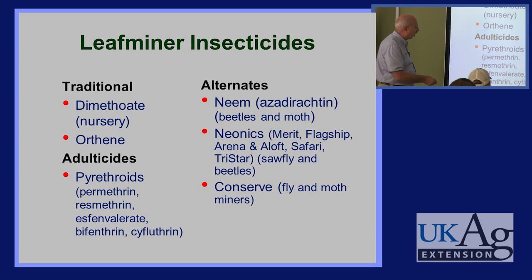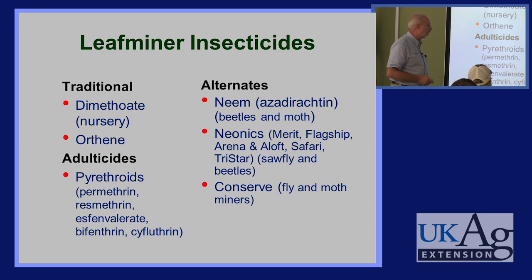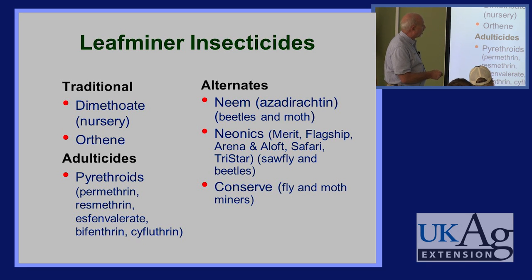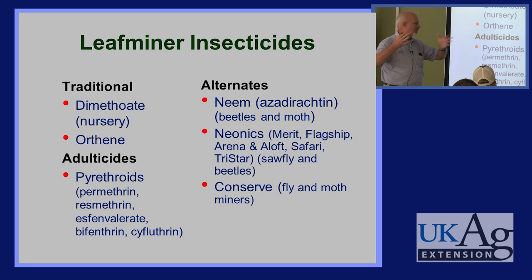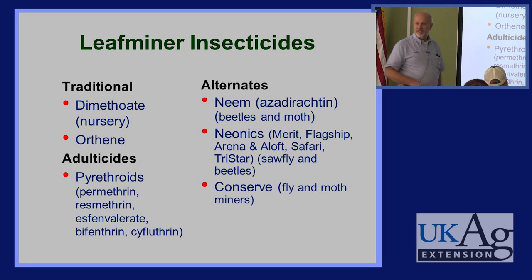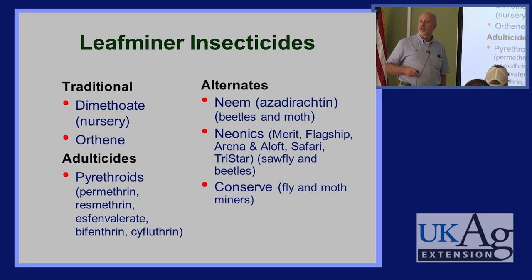Another option increasingly seen in nursery production is Conserve, which contains spinosins — a microbial byproduct fermented in large tanks and refined into spinosids. Dow has started making a synthetic version. Spinosids are very good for fly control and moth control, but not very effective on beetles. Interestingly, they're also fairly good on mites, which we'll discuss when we get to miticides.